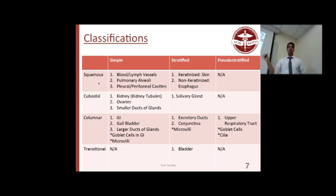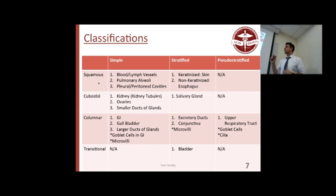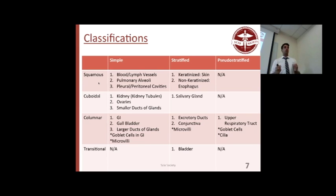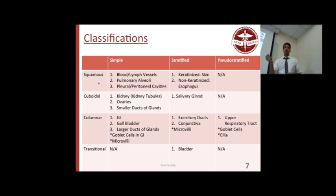Simple squamous cells are involved with lining of things — blood vessels and lymph vessels are lined with simple squamous cells. Your alveoli also need diffusion through them. So wherever diffusion is involved, you get simple squamous because they're really thin — one layer of squamous cells.